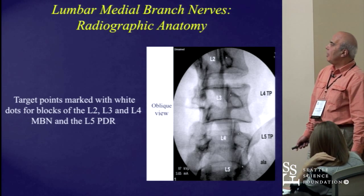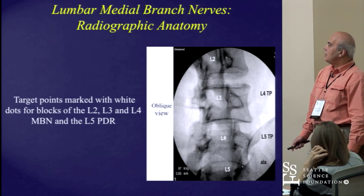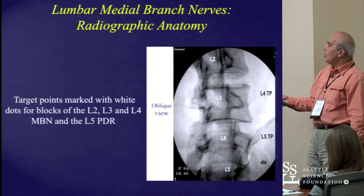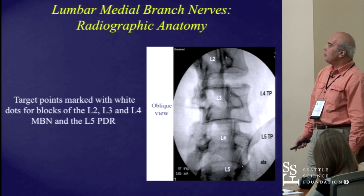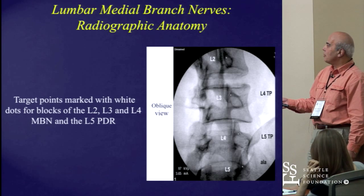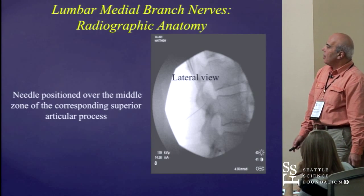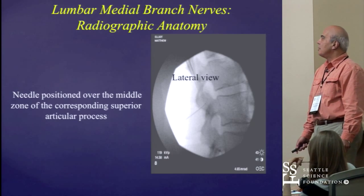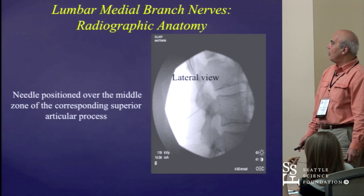This picture is taken from the first edition of the SIS guidelines. This is an oblique view showing white dots that indicate the location for needle placement for medial branch blocks at L2, L3, and L4 levels, and for the L5 primary dorsal ramus. This is a lateral view showing the needle in position over the middle zone of the corresponding superior articular process.